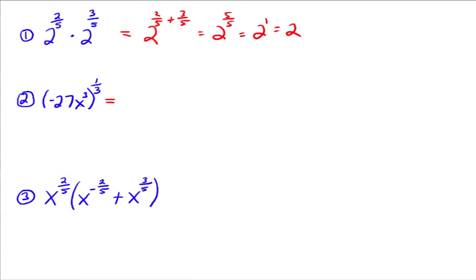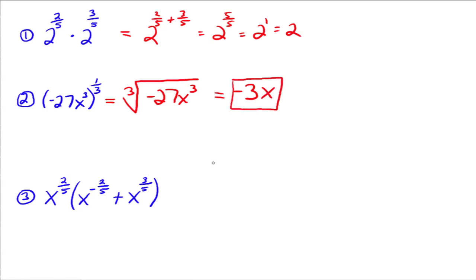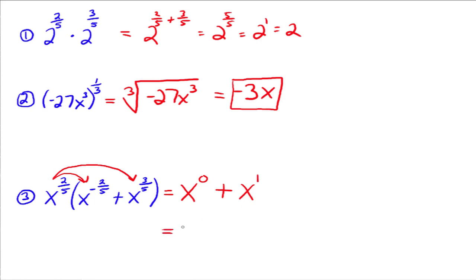Here's another one: we've got all of this raised to the 1 third power, which means the cube root of negative 27 x cubed. The cube root of negative 27 is negative 3, and the cube root of x cubed is x, so this goes to negative 3x. And using the distributive property: x to the 2 fifths times x to the negative 2 fifths gives x to the 0, which is 1. Then x to the 2 fifths times x to the 3 fifths gives x to the 1, which is x. So the result is 1 plus x.